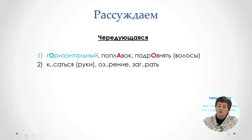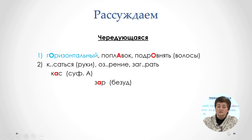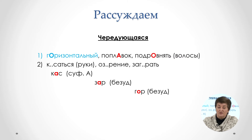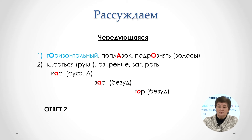Внимательно работаем со вторым рядом и обнаруживаем, что «касаться», «озарение» и «загорать» — все три слова, в которых есть чередующиеся гласные в корне. Правда, зависят они от разных условий: корень «кас» — от суффикса «а», а корни «зар» и «гор» — от ударения. Но в любом случае это позволяет нам найти правильный ответ.